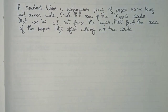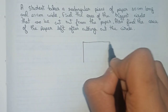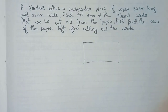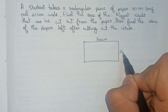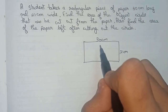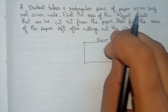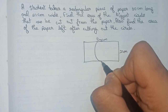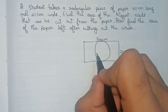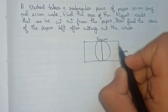To solve this, let's first draw a diagram to make it clear. Let this be our rectangular sheet — it is given as 30 centimeters long and 21 centimeters wide. The biggest circle possible is the circle that touches the width of the rectangle, so its diameter will be equal to 21 centimeters.